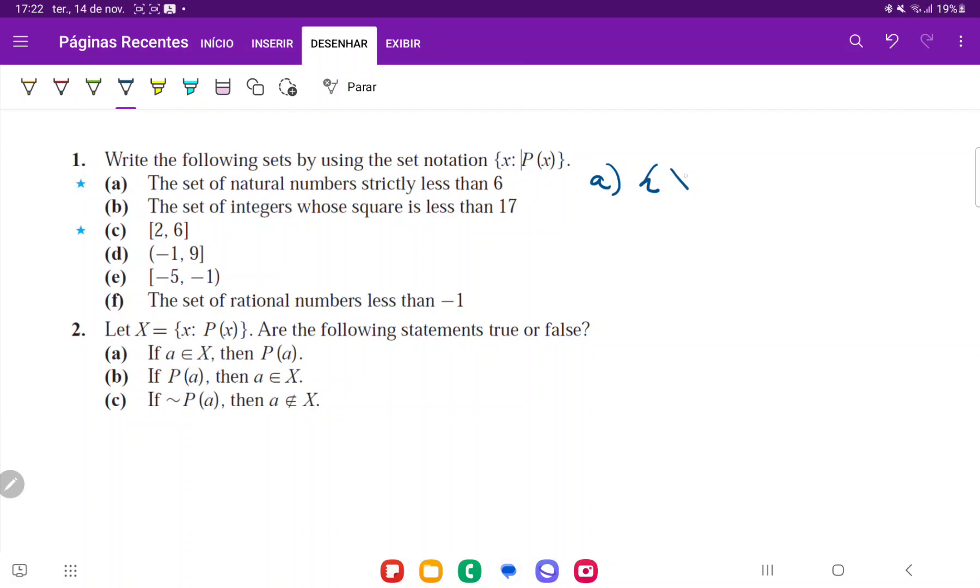So first we have to say that our element is going to be x, but we have to see where we're getting that x from. So it is going to be from the natural numbers, that's where we get it from, and then we say that it can be any natural number as long as it is less than six. So that's it for item a.